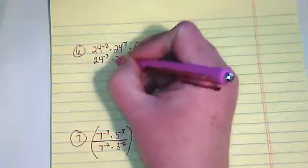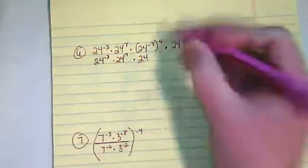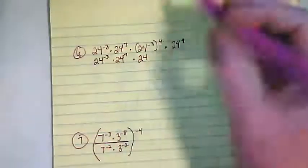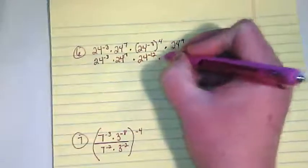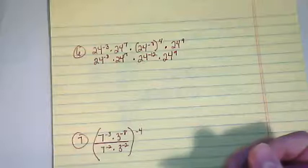And this is the first step I need to take. 24 negative 3 times 4 would give us negative 12 times 24 to the 9th.